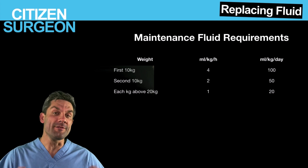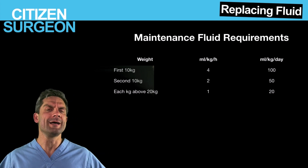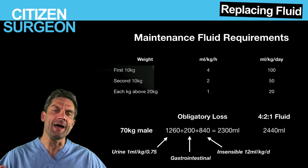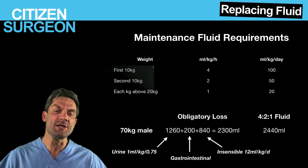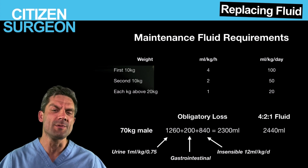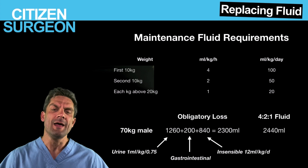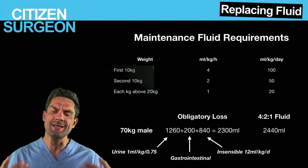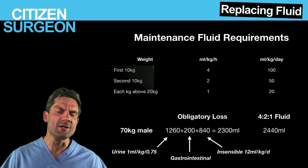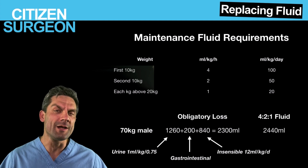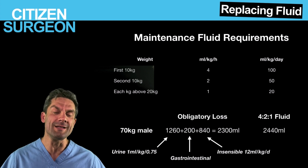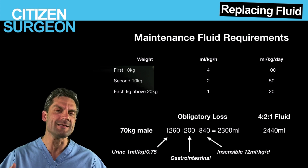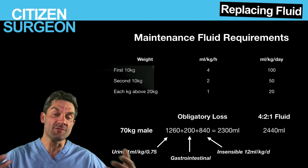Why does the 4-2-1 rule work? Take average numbers: urine at 0.75 mL/kg gives about 1260 mL; GI losses add 200 mL; insensible losses in a hot climate at 12 mL/kg/day bring us to about 2300 mL. The 4-2-1 rule for a 70-kg person gives 2440 mL — closely approximating obligatory fluid losses. That's why it works for determining maintenance fluid requirements.